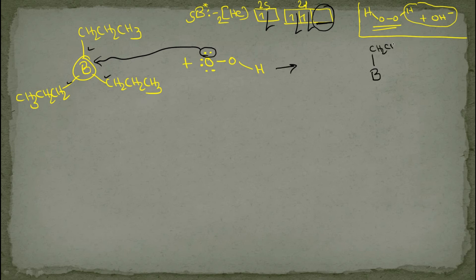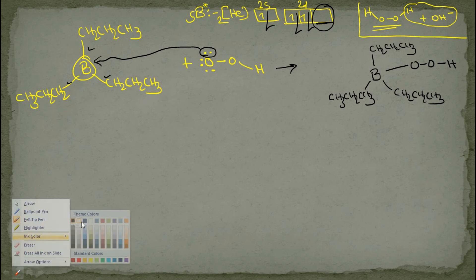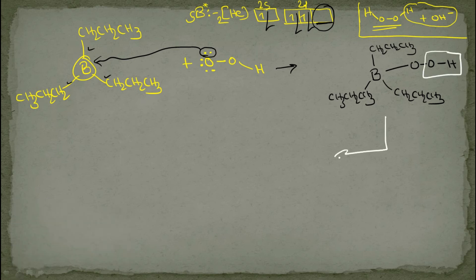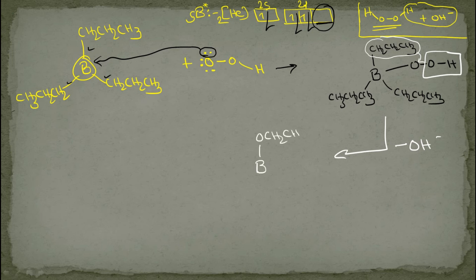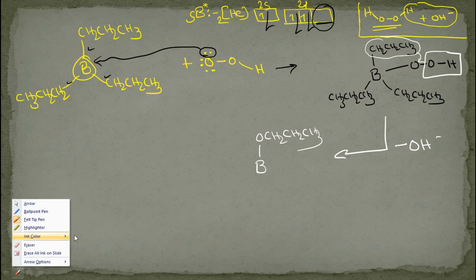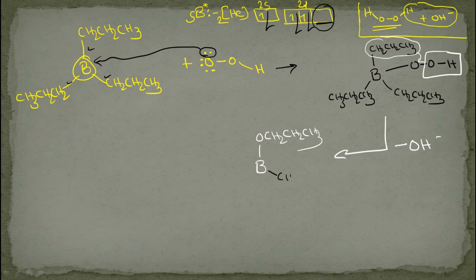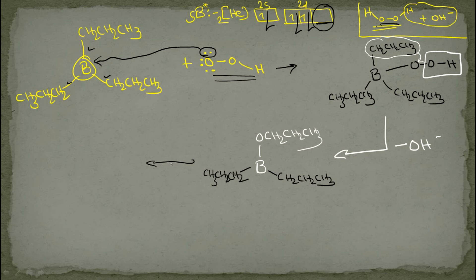So the lone pair of OOH is attracted by boron, giving B attached to three propyl groups (CH2CH2CH3 × 3) and OOH. Now H2O leaves from this intermediate, and the entire propyl group migrates to the oxygen. We get B with one O-CH2CH2CH3 and the remaining two propyl groups.